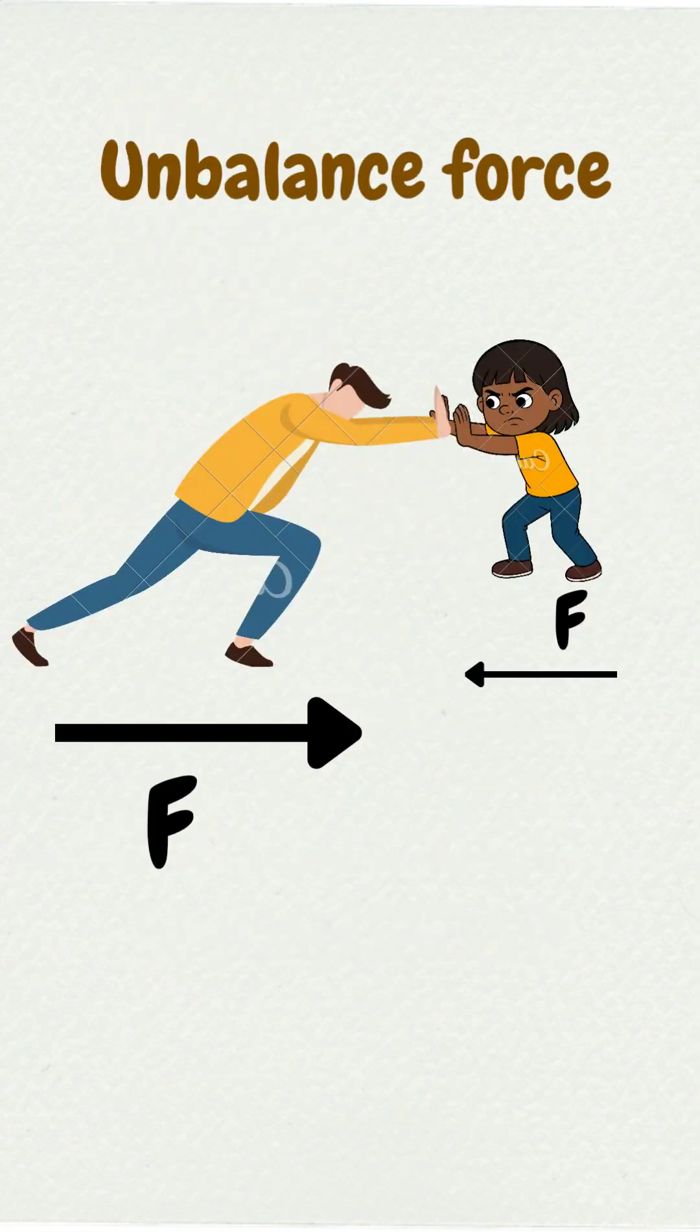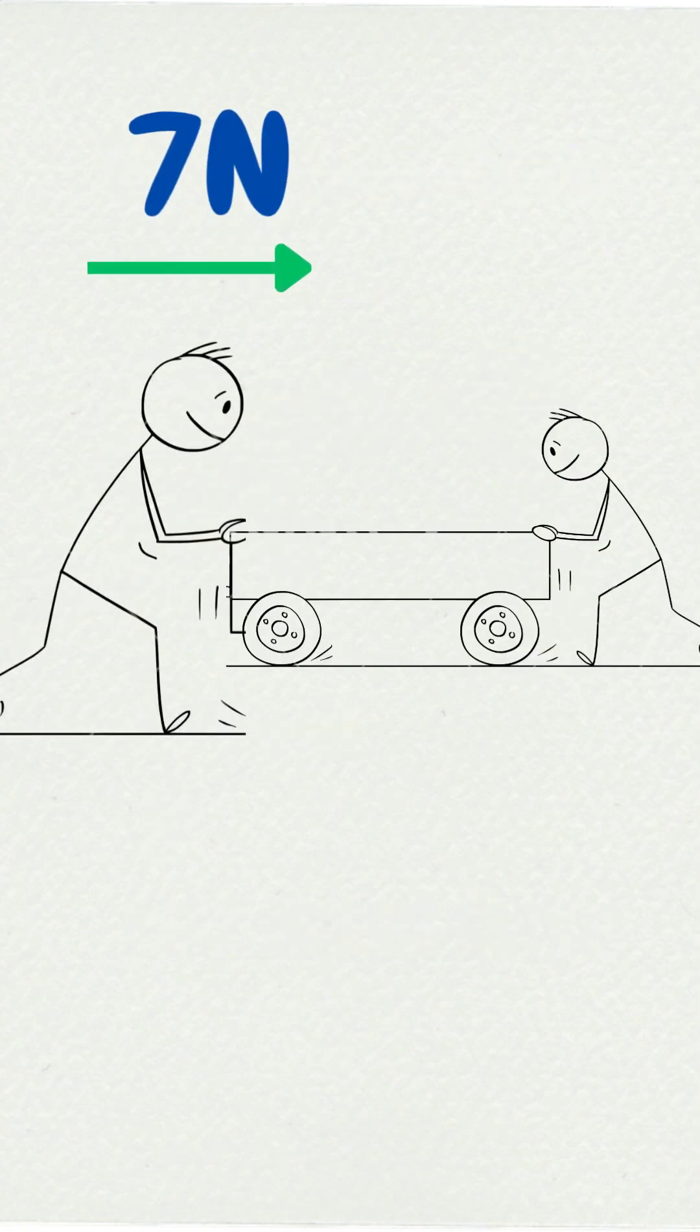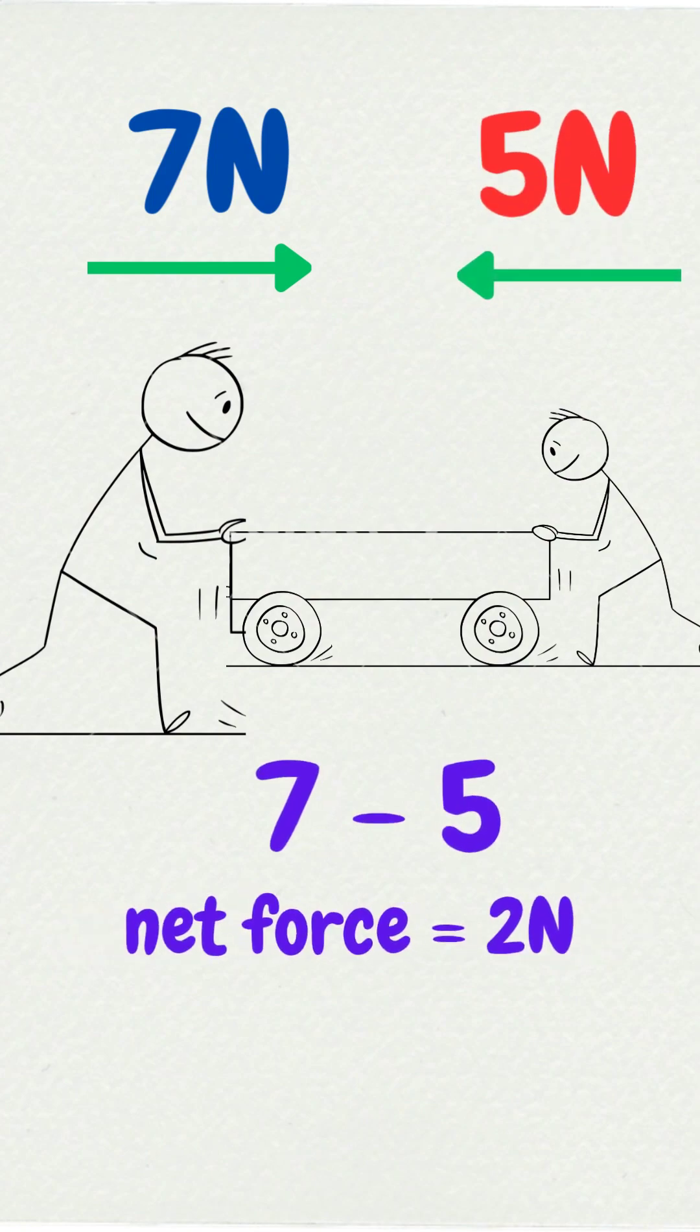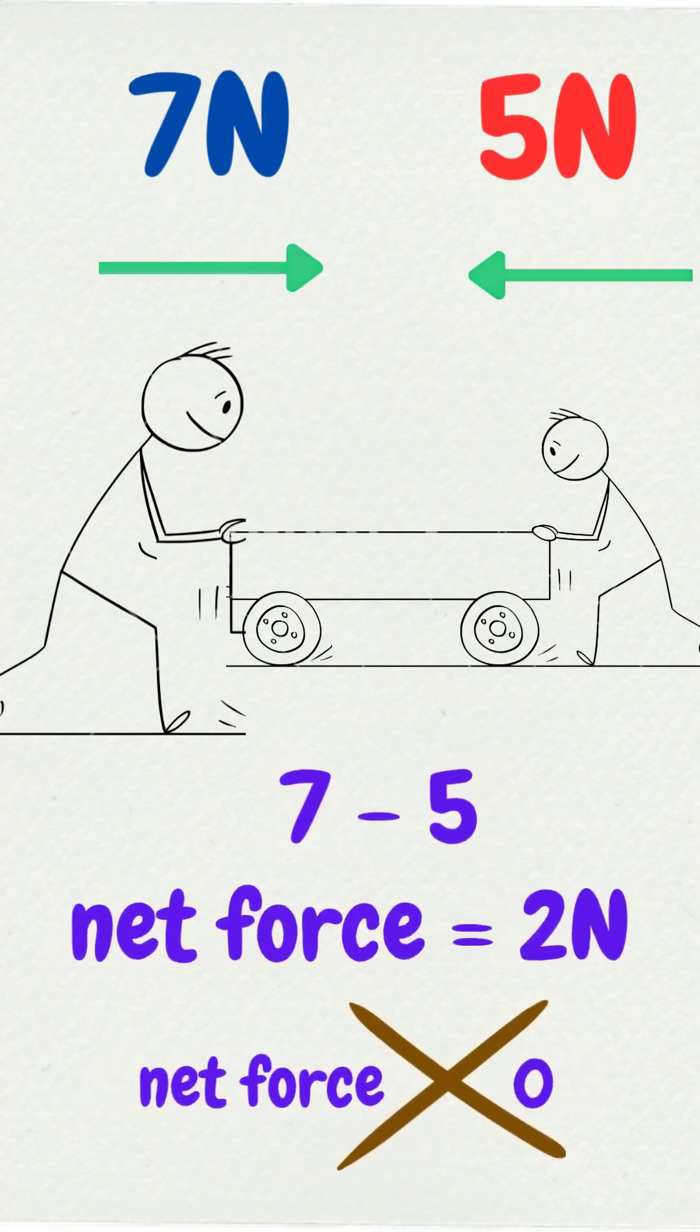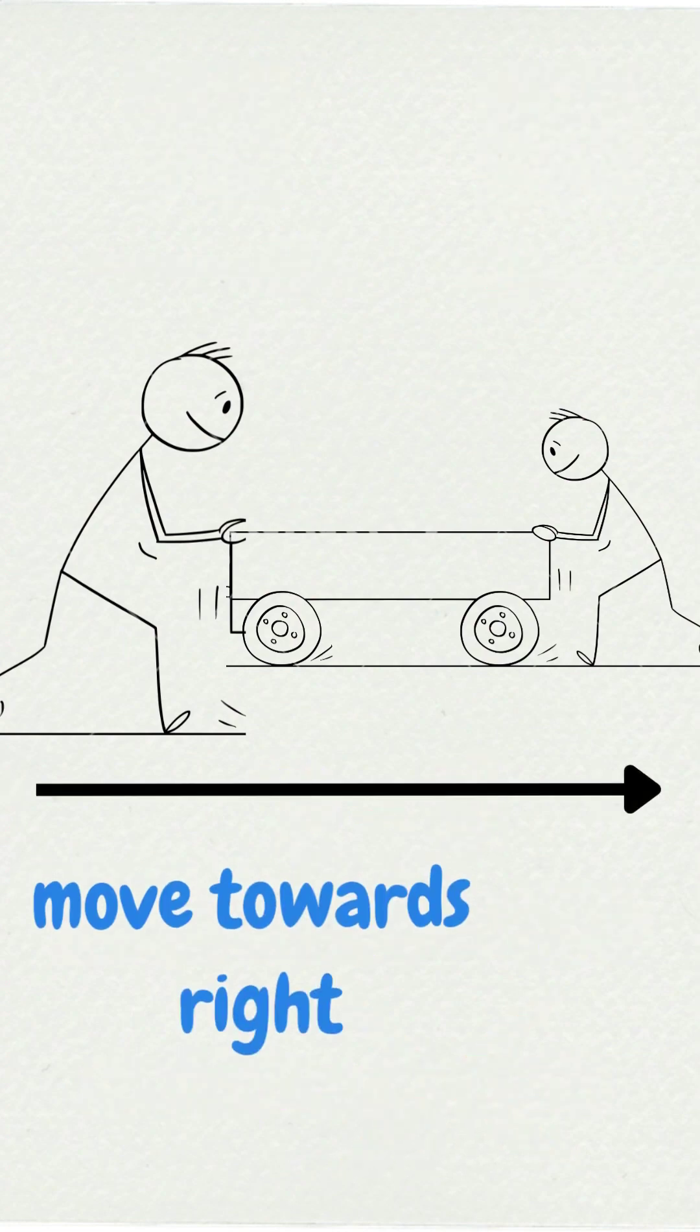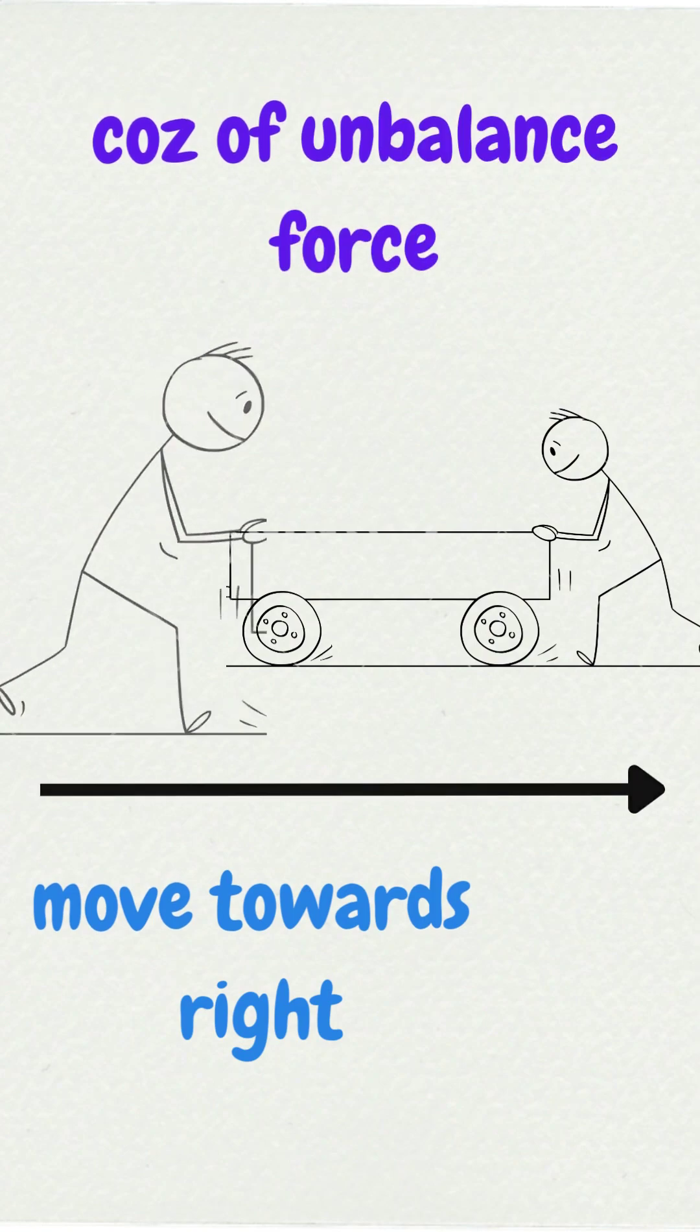Unbalanced forces are forces that are not equal. These forces do not cancel out. Suppose there is 7N force from left and 5N force from right, so there is 2N net force. In this case, net force is not zero, so the object will move from state of rest towards right. An unbalanced force causes a change in motion.